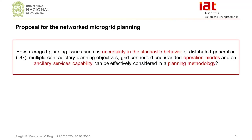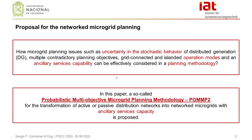So the question is: how can microgrid planning issues such as uncertainty, multiple contradictory planning objectives, different operation models, and the ancillary services capability itself be effectively considered in a planning methodology? In prior research, a methodology called Probabilistic Multi-Objective Microgrid Planning Methodology, or simply POM, was proposed. In this paper, a second version called POM2 is proposed to holistically plan network microgrids.